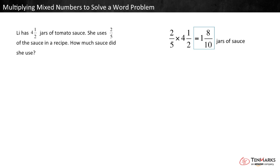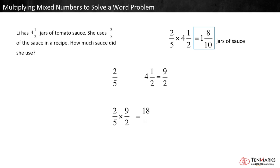Check your work by multiplying with fractions greater than one. Two-fifths is already a fraction. Four and a half is the same as nine halves. So multiply two-fifths times nine halves. Two times nine is eighteen, and five times two is ten.